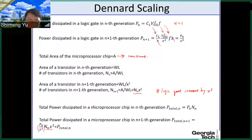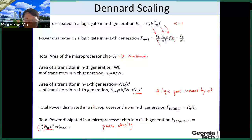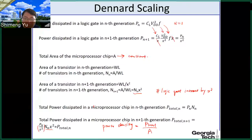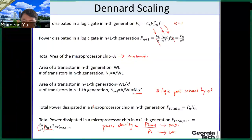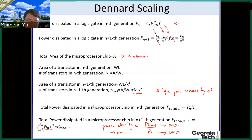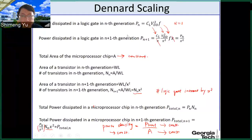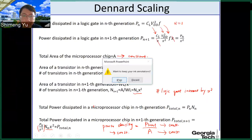In other words, power density — defined as total power divided by area — is constant. The total power is constant and the total chip area is constant, so power density is constant. This is the Dennard scaling rule regarding power.